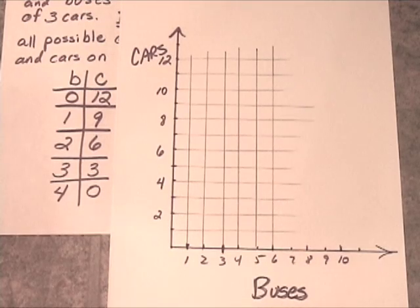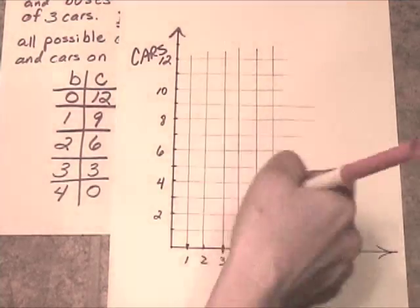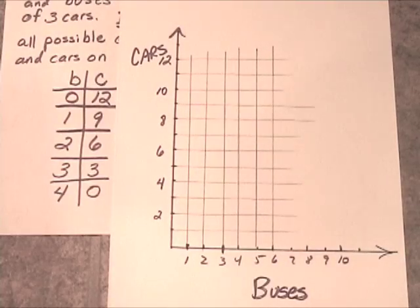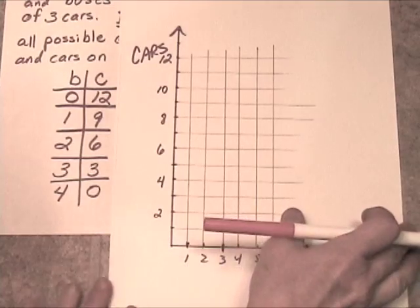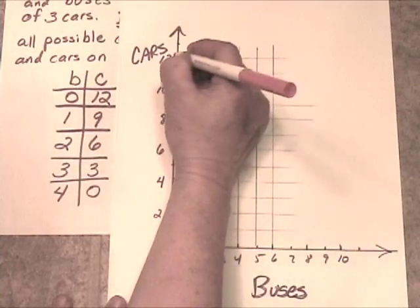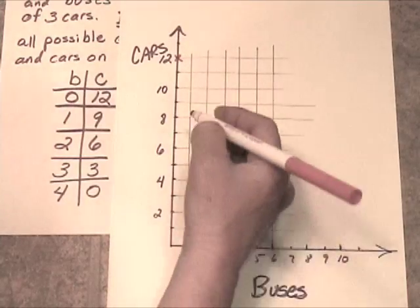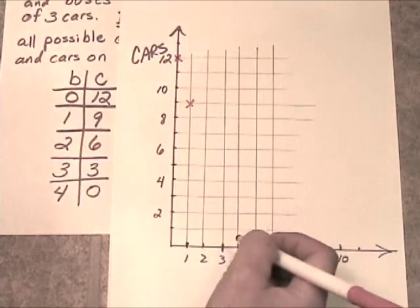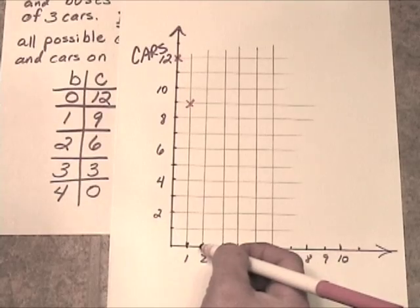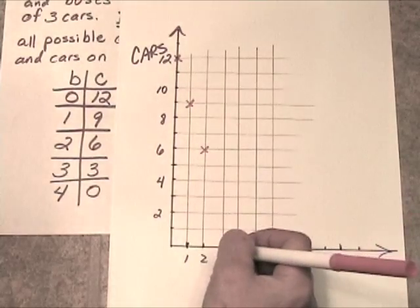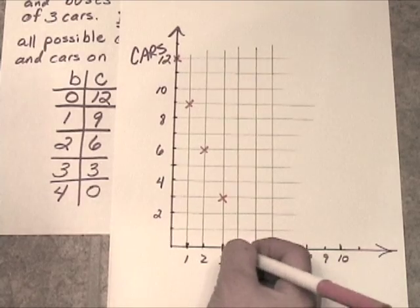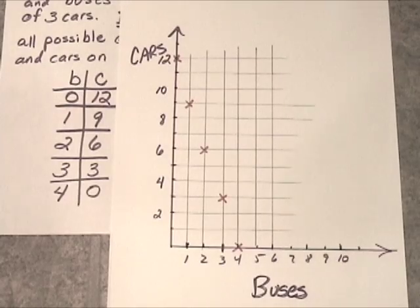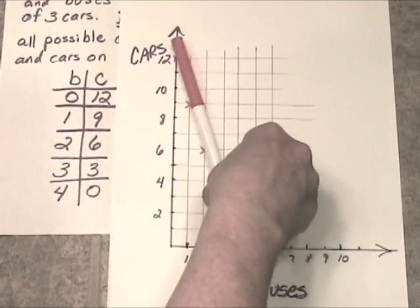Buses and cars cannot be negative. So we're going to be in the first quadrant. Let's go ahead and see where these points would be. If we have zero buses, we're going to have 12 cars that will fit. So at zero buses, we're up here, right there. At one bus, there are only 9 cars that will fit. And at two buses, there are only 6 cars that will fit. 3 buses means 3 cars. And 4 buses means absolutely no cars. So you can see we do have a linear equation here. Straight line. They all fall in a straight line.